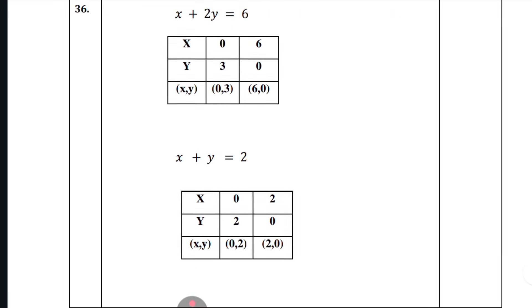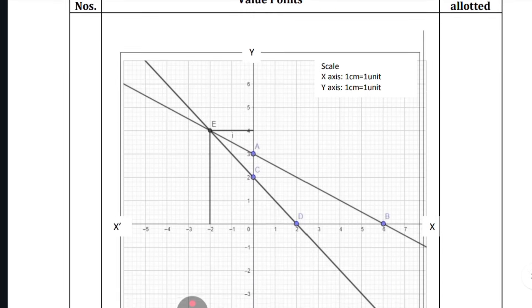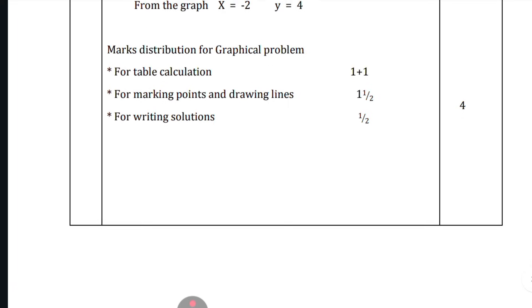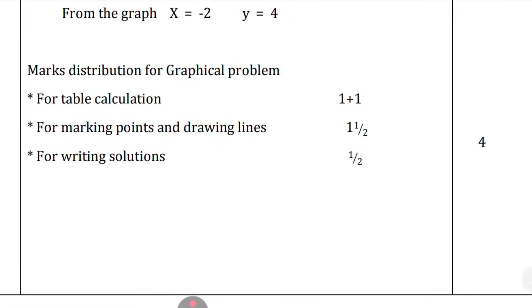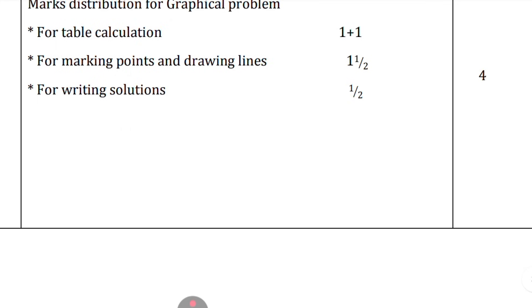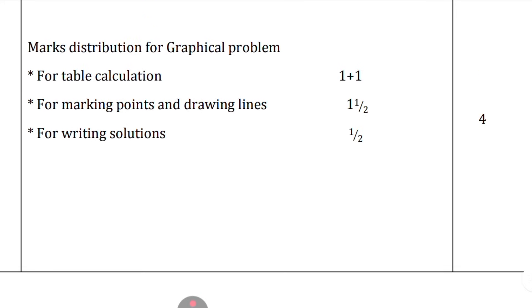Here you can see the marks distribution for graphical problem. For table calculation, one plus one marks means for one table one mark and another table again one mark. For marking points and drawing lines, one and a half marks they are given. For writing the solutions of x and y, they will give half marks. You can calculate: two, one and a half, and half - this is totally four marks.